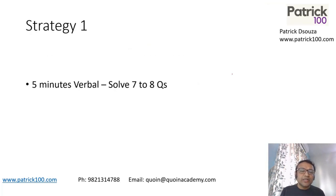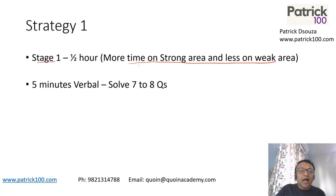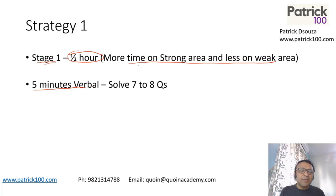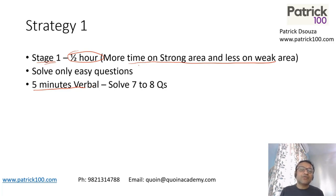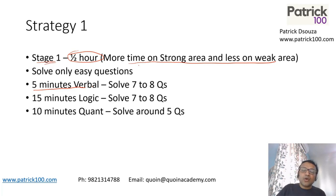I will talk about two strategies. Strategy 1: Stage 1 is half an hour. You spend more time on your strong area and less on your weak area. In Stage 1, spend 5 minutes on Verbal — solve 7 to 8 questions that don't take time, like antonyms, synonyms, and grammar, and skip reading comprehension and para-jumbles. Solve only easy questions in Stage 1. Then spend the next 15 minutes on Logic — go through all questions, pick up 7 to 8 easy ones and solve them. Then 10 minutes on Quant — solve around 5 questions.